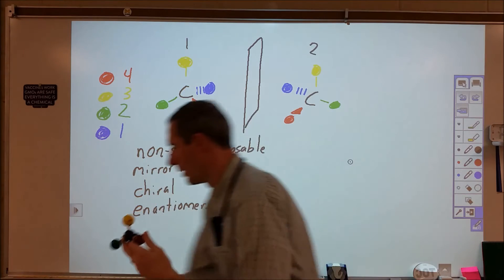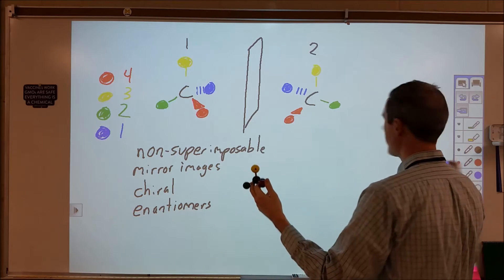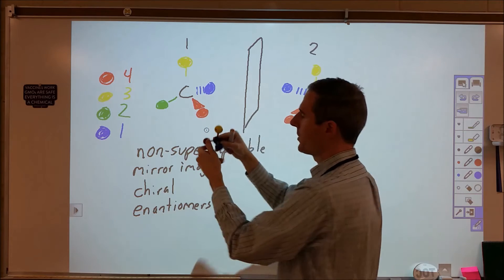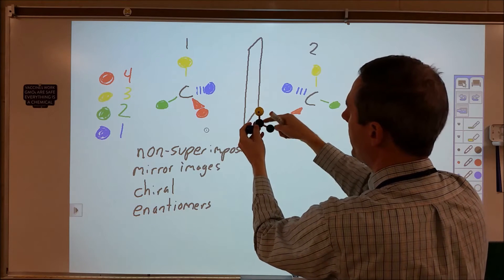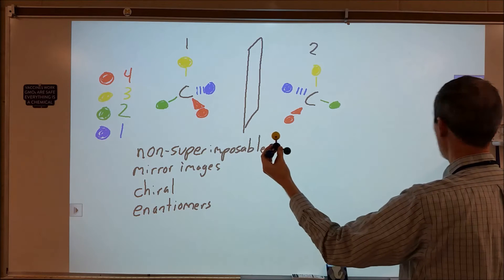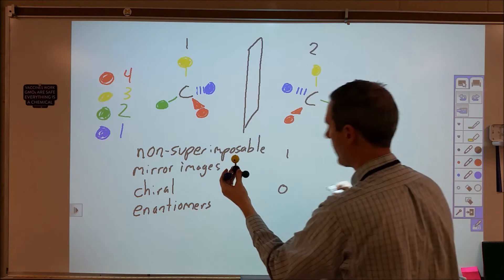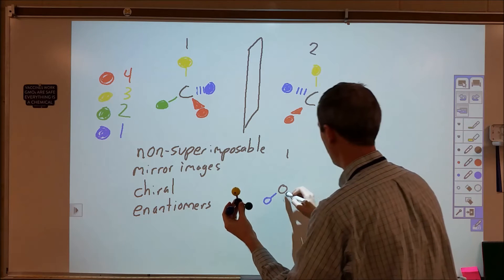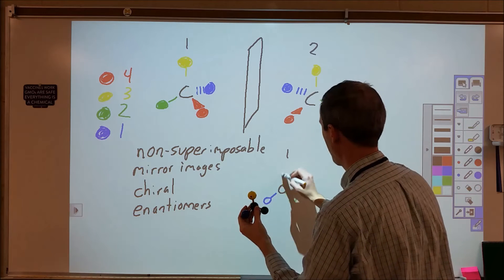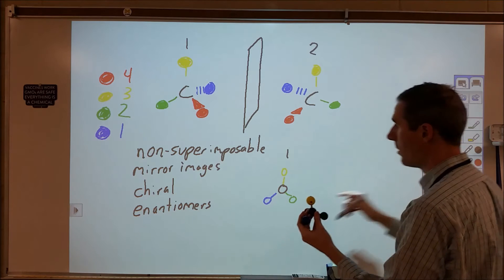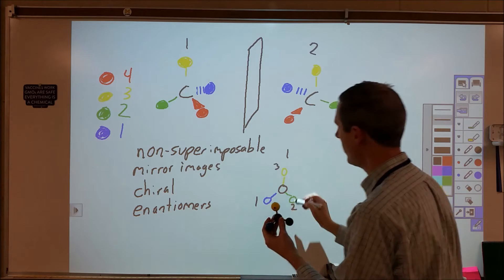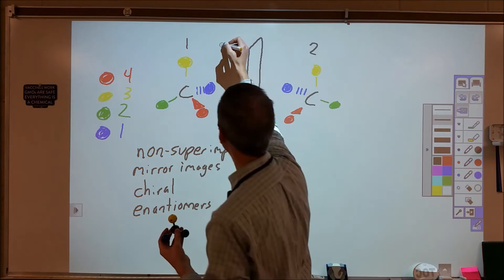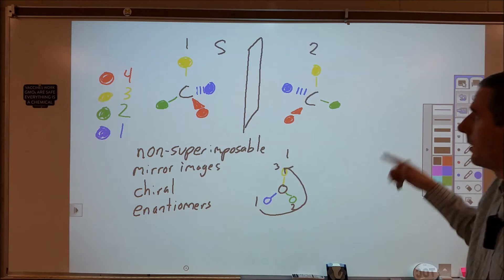So this is compound one. The way to come up with a designation is I need to move compound one so that priority four is facing away from me — I want my eye going down the line from carbon to priority four. When I do that, I redraw number one: carbon in the middle, blue coming down here, green coming down here, and yellow going up. I label those priorities: priority one, priority two, priority three. When I go from one to two to three, I'm moving in a counterclockwise rotation. Therefore, we give this the label S — for sinister, or left-handed — and that is counterclockwise.